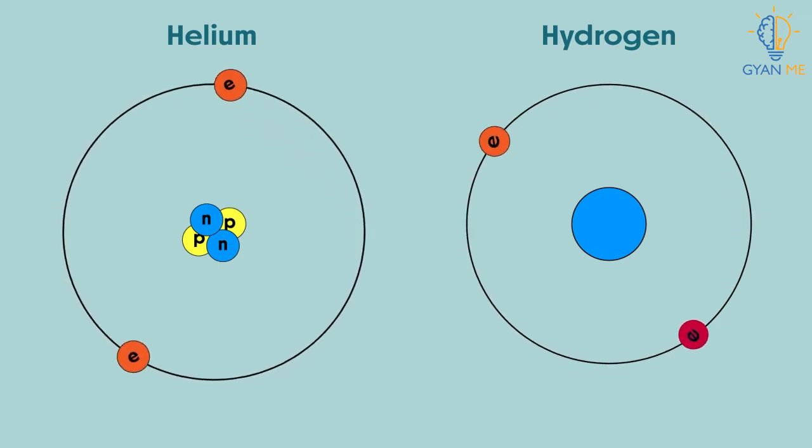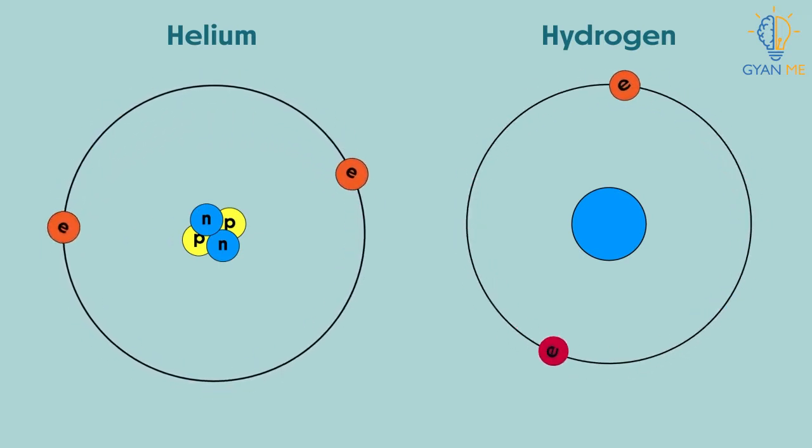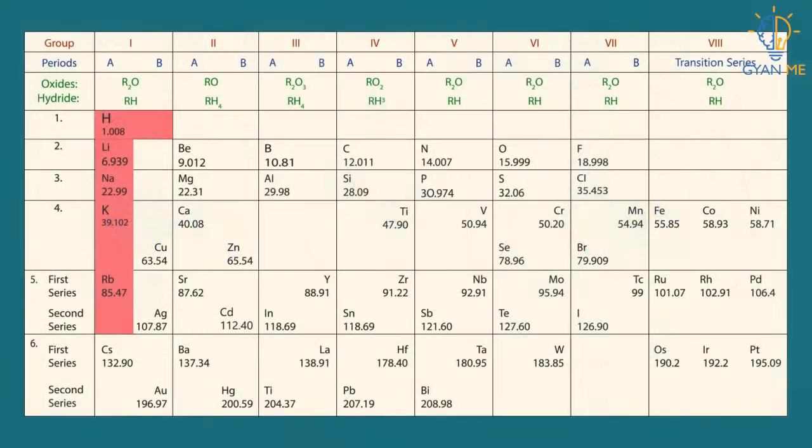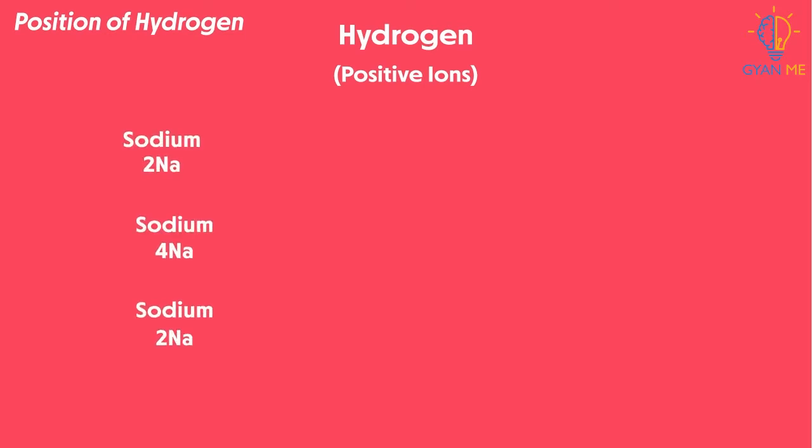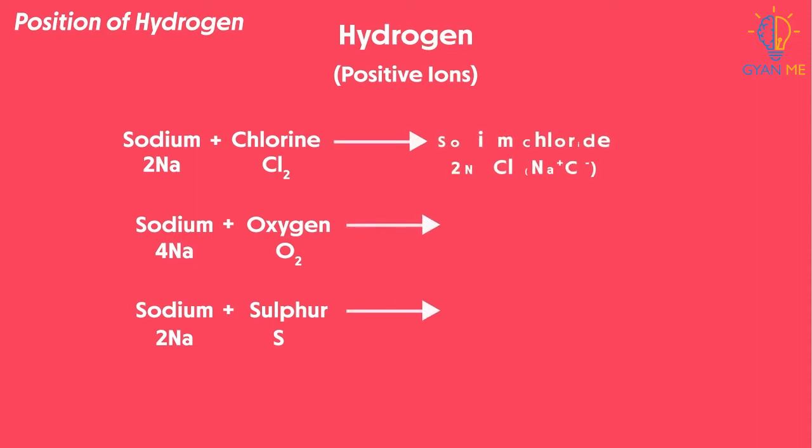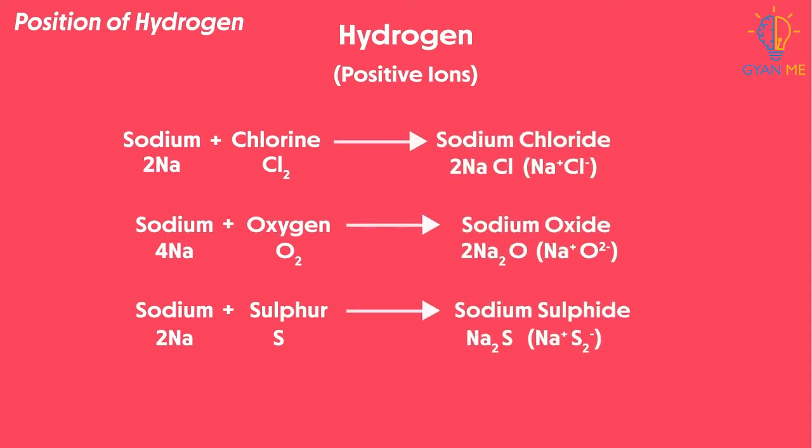Now, can you recall which elements gain one electron and form negative ions? Yes, you are right. There are compounds like chlorine and fluorine in group 7. Due to this, hydrogen reacts readily with many elements and forms compounds with variety of properties. Hydrogen, like group 1 elements, forms the positive ions and compounds like them. For example, we take sodium. Sodium reacts with many reagents like chlorine, oxygen, and sulfur to form compounds like sodium chloride, sodium oxide, sodium sulfite.